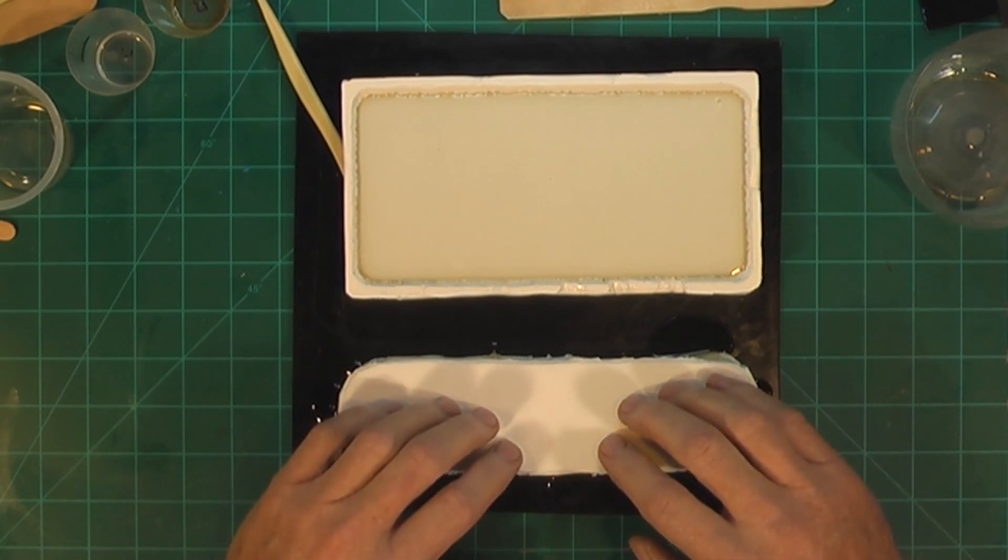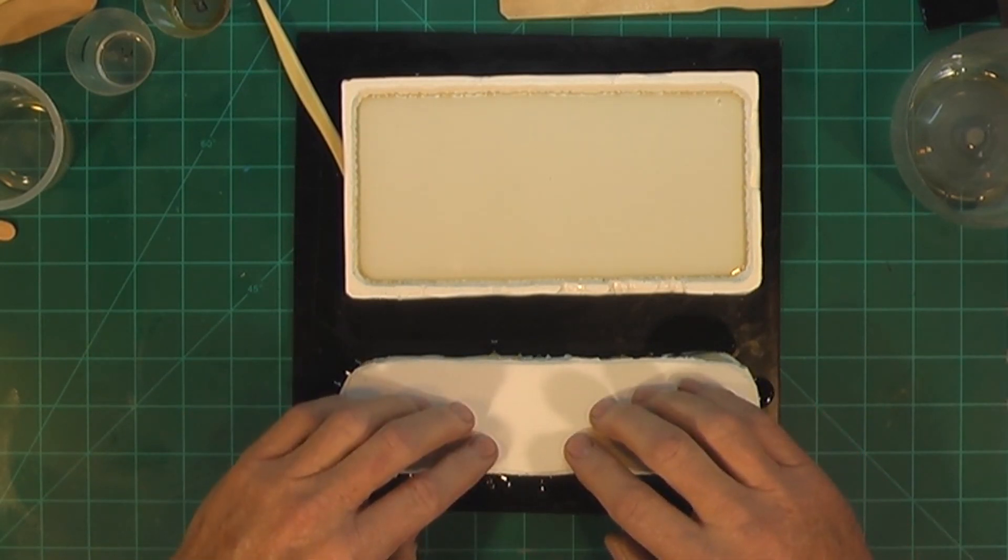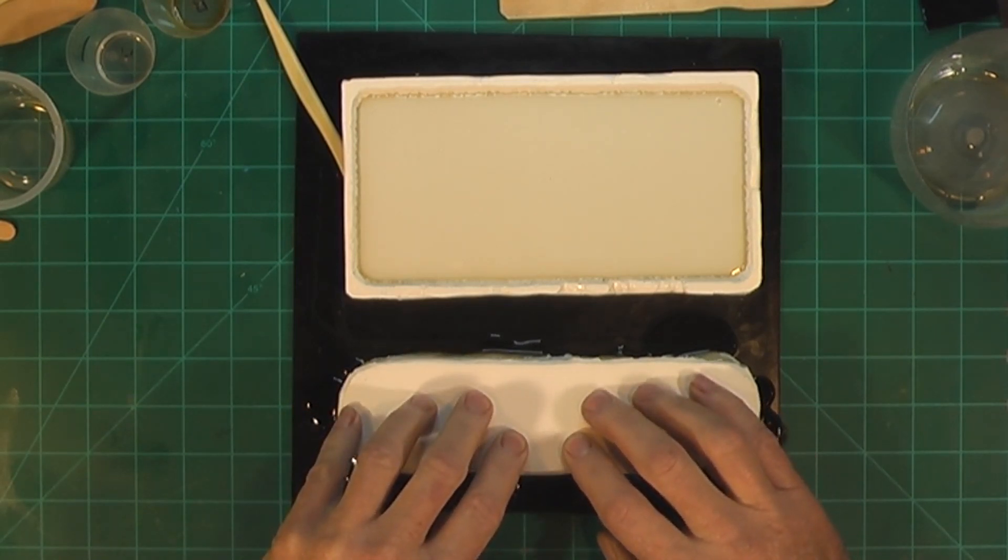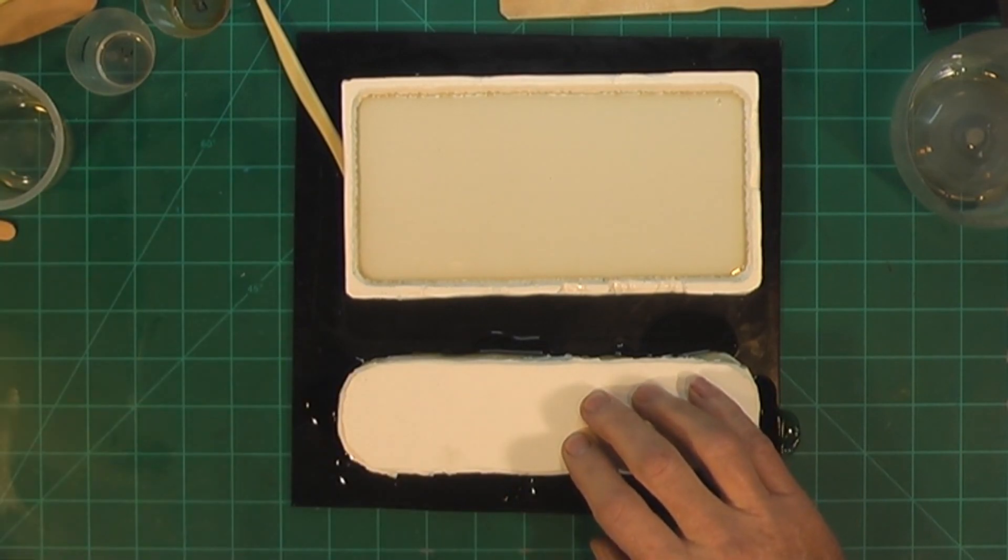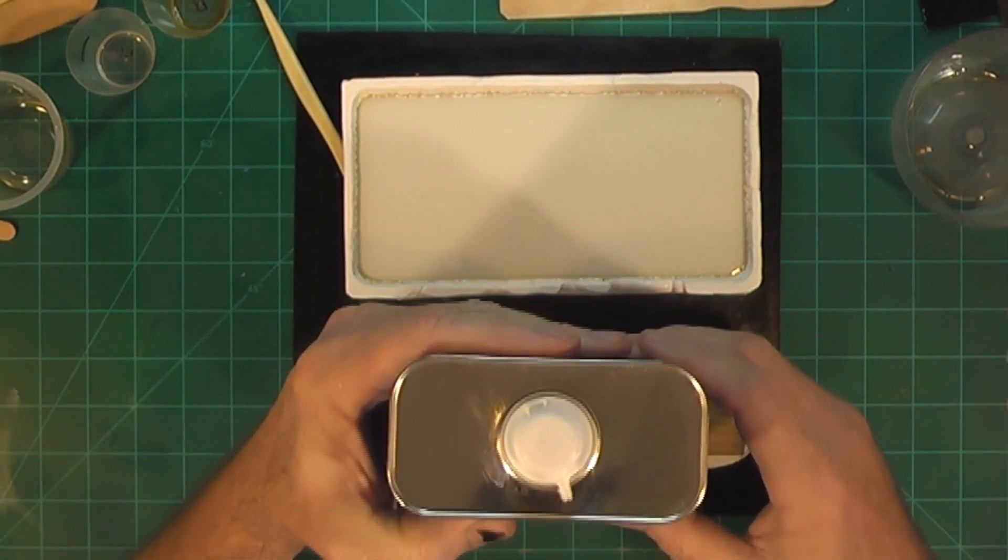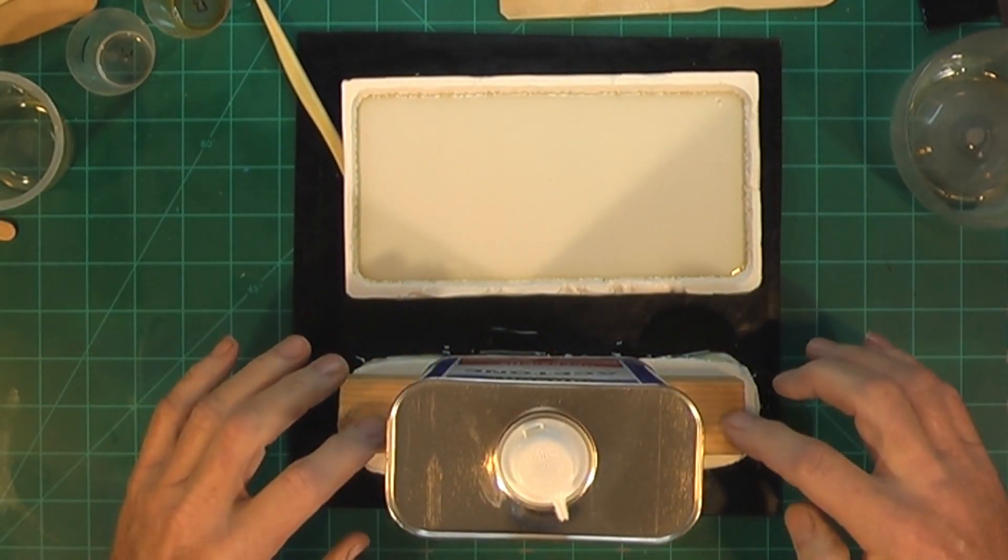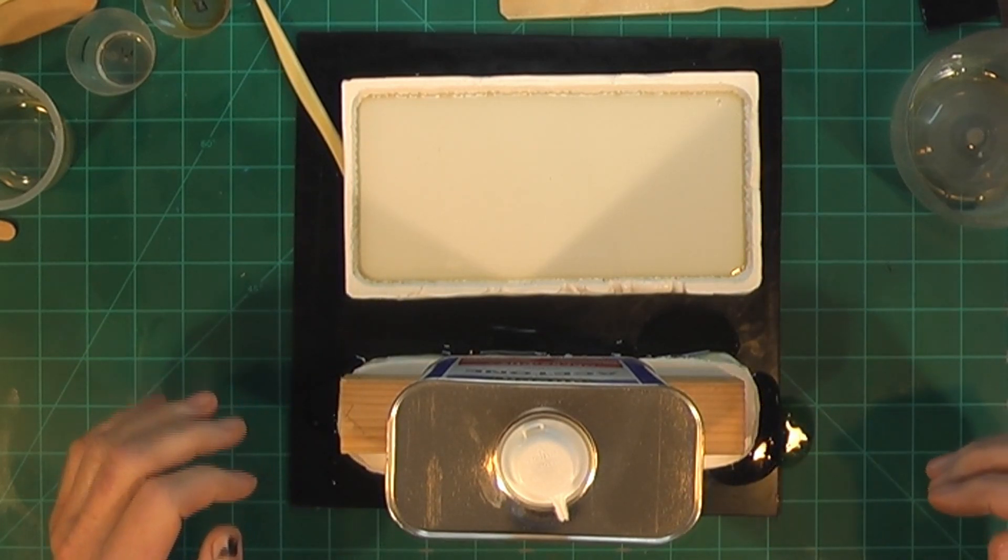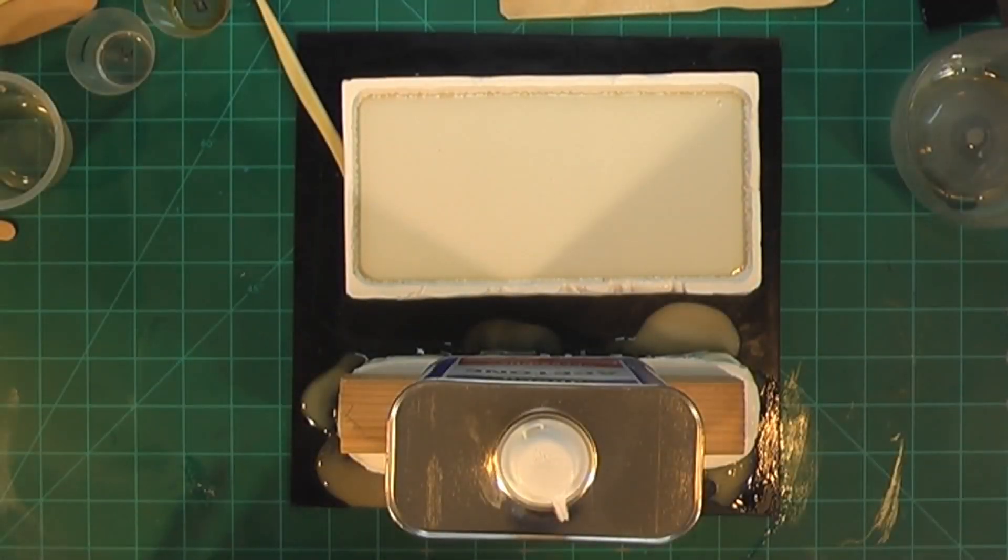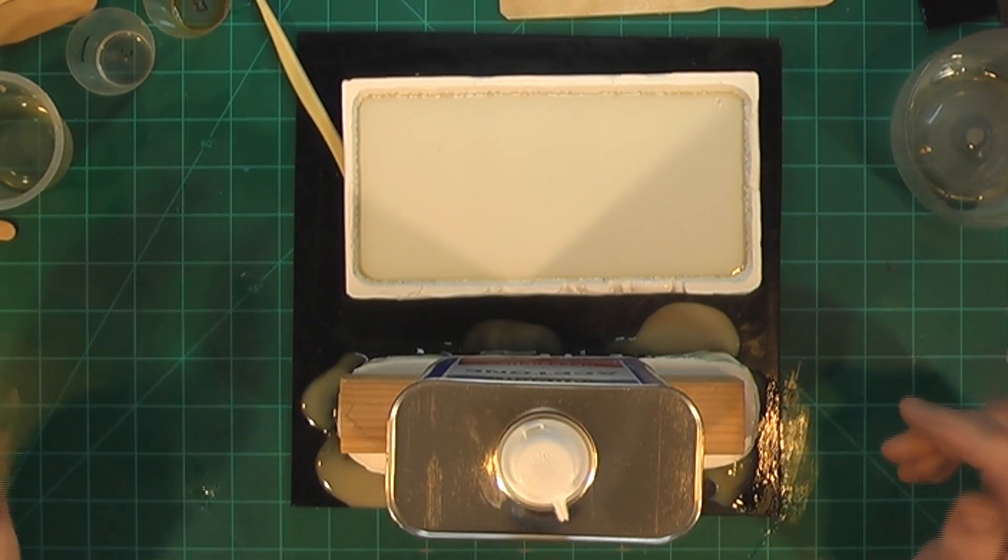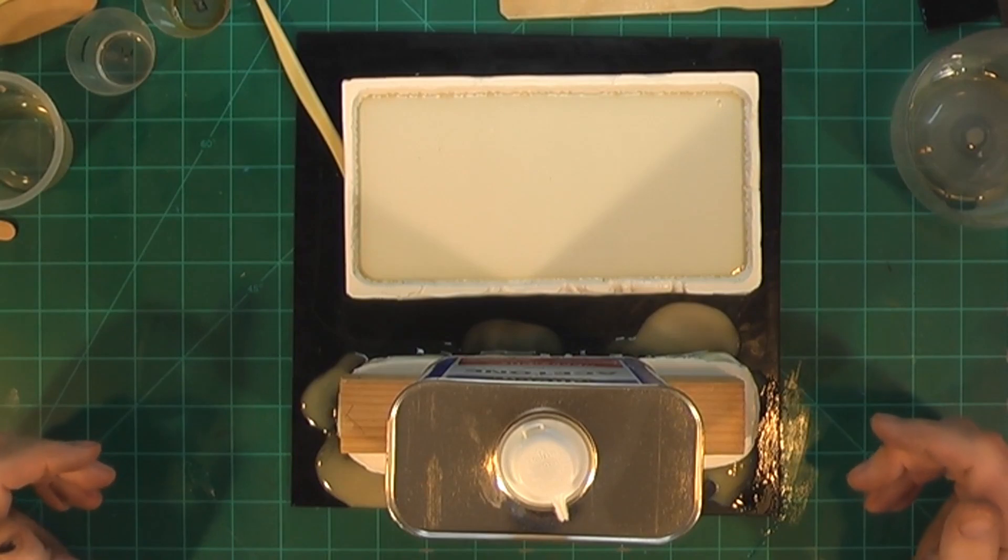Probably going to have a mess to clean up off my cutting board because it's probably going to run all the way out onto my board. But this usually peels off alright once it sets. So that's going to push that. So now I just need to put some weight on it and let it cure. Alright, all I got to do now is just let it sit here and cure for at least 30 minutes or so and come back and see how these parts turned out.